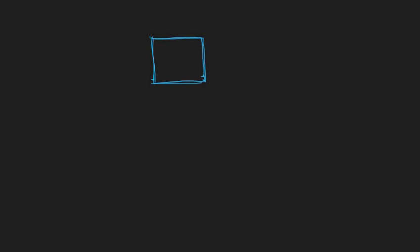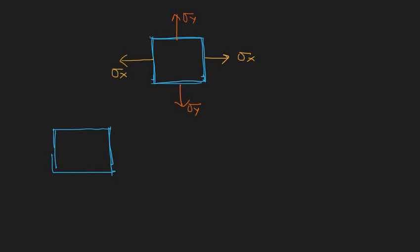So let's start with the biaxial case. We have an element under the action of biaxial stress. Along the x-direction we have sigma_x, and along the y-direction we have sigma_y. First we will consider only sigma_x — what is the strain effect? If you are applying only sigma_x, due to this tensile stress you have a strain in the x-direction.